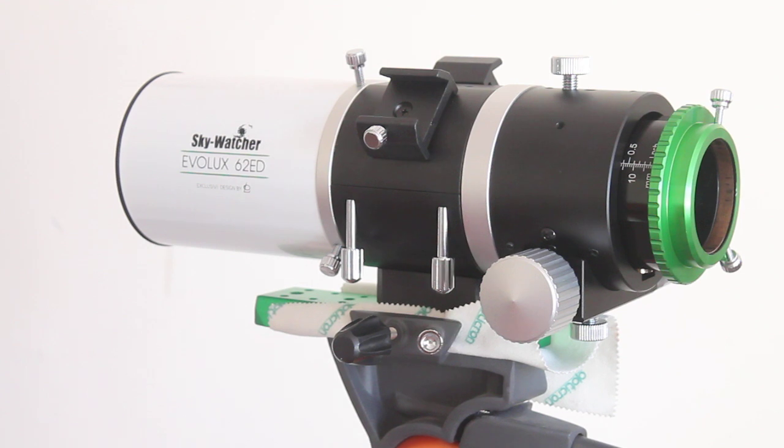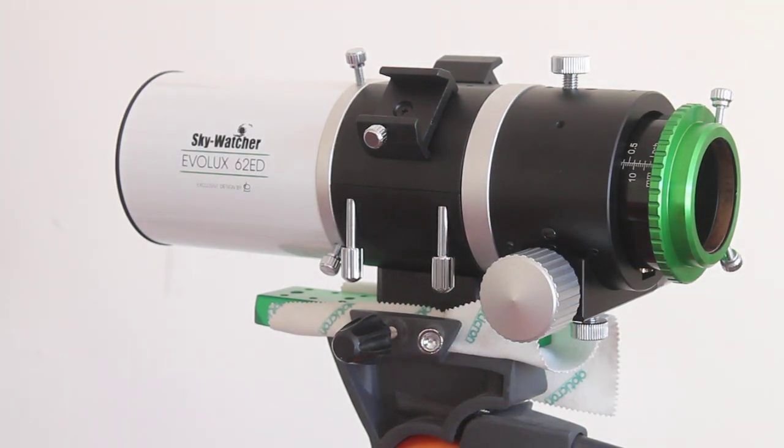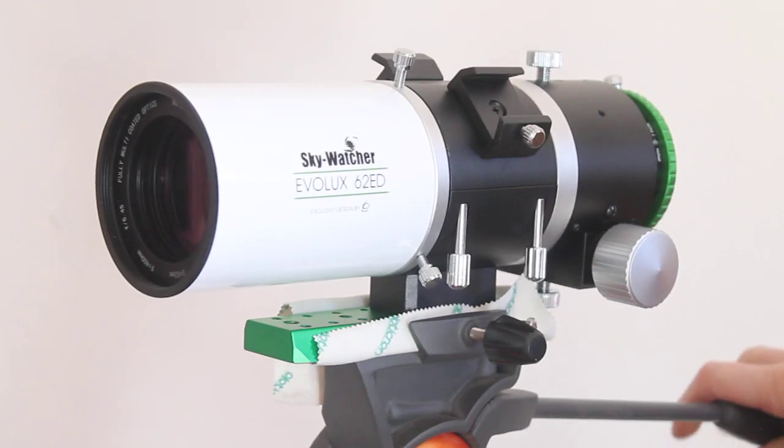It does not come with a diagonal or any eyepieces. What you see here is what you get, other than the case. The case does have removable compartments for accessories such as the reducer corrector that you can buy. I mentioned the weight, two and a half kilograms, yes it is. The tube length is 295 to 370 millimeters, and the draw tube pulls out as a sunshade, nice and smoothly.